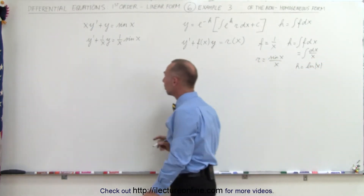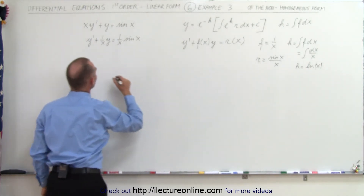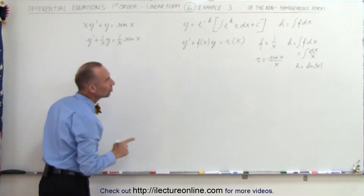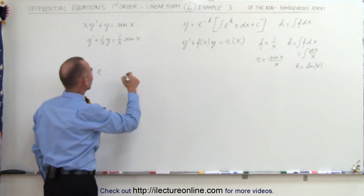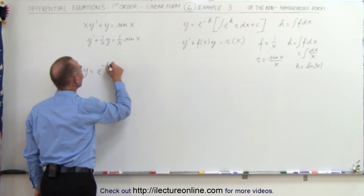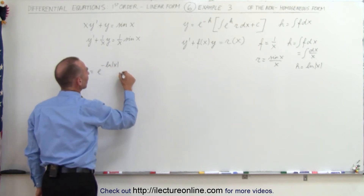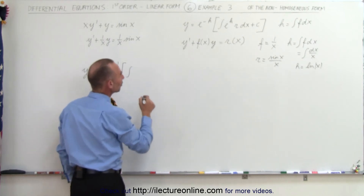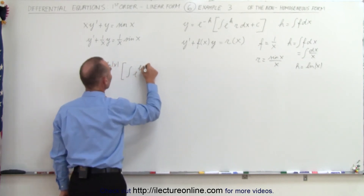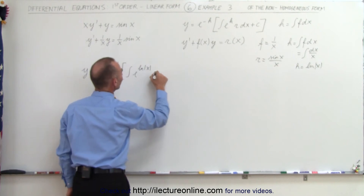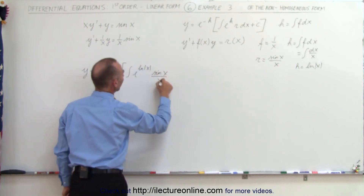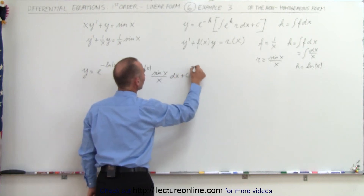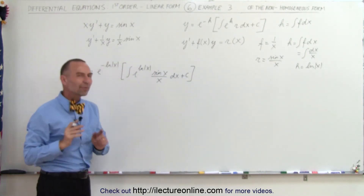Plugging that into our general solution equation, we know that y is equal to e to the minus h — and h is the natural log of x — times the integral of e to the h, which is e to the natural log of x, times r, which is sine of x divided by x, times dx, plus a constant of integration.